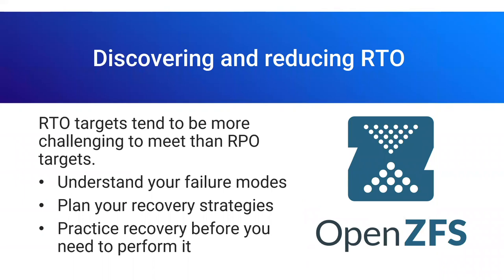When we talk about the recovery time objective, this is more challenging than recovery point objective because you've got so many more things to think about. You need to understand your failure modes. Some very common ones are a user clicking a shiny link and now you've got ransomware encrypting everything it can reach — which is basically indistinguishable from a malicious rogue employee who decides to delete everything on their way out. That's one common failure mode, because you're still talking about employee-level access wrecking everything that user can get to.